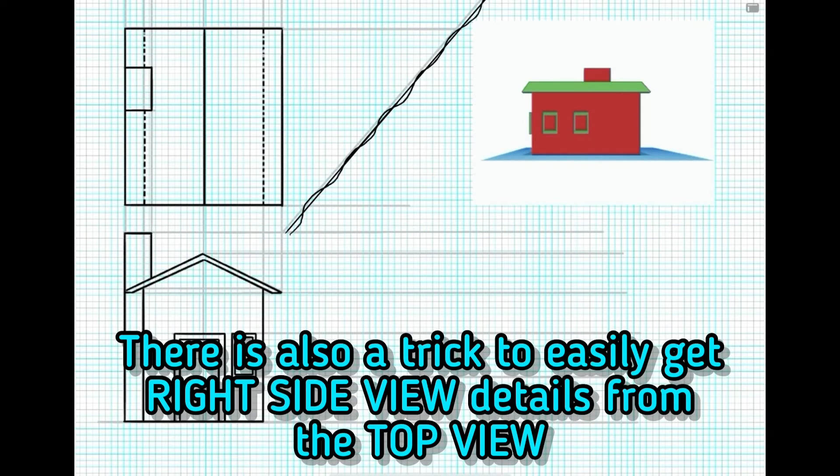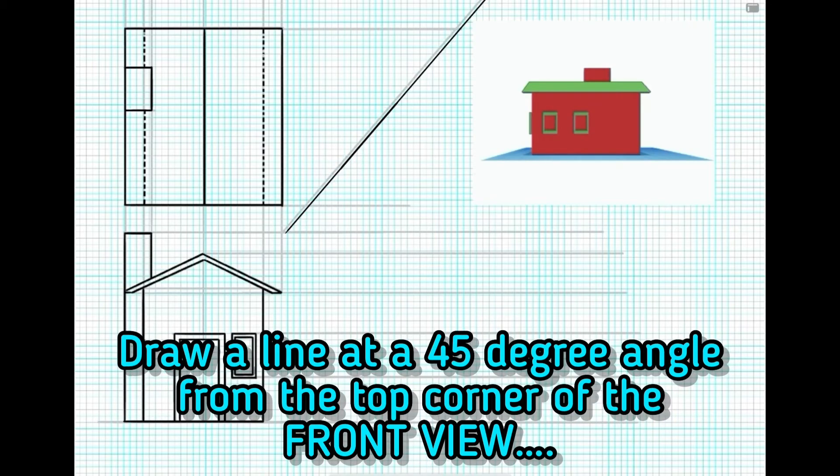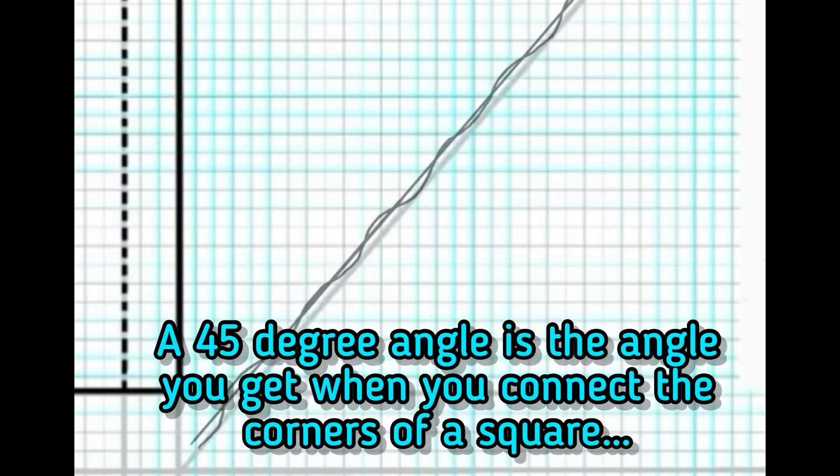There's also a trick to easily get right side view details from the top view. Draw a line at a 45-degree angle from the top corner of the front view. A 45-degree angle is the angle you get when you connect the corners of a square.